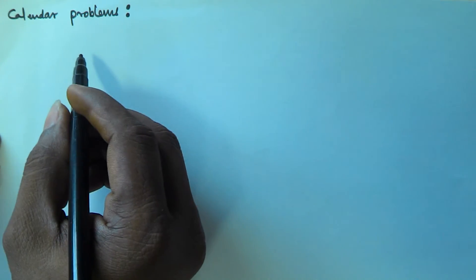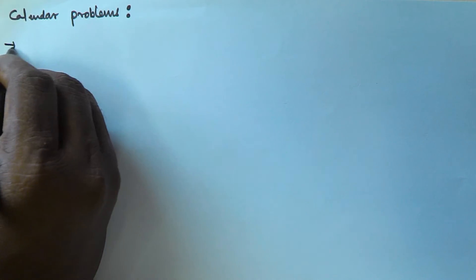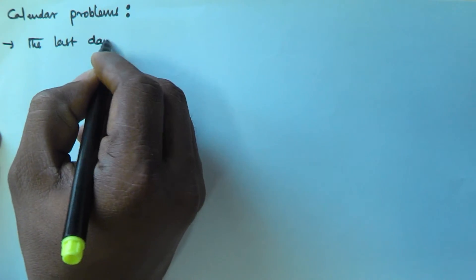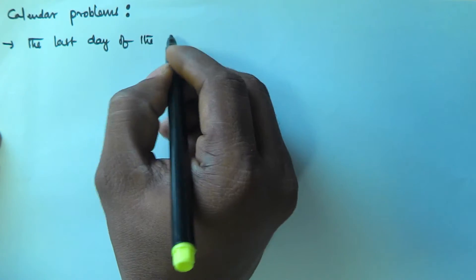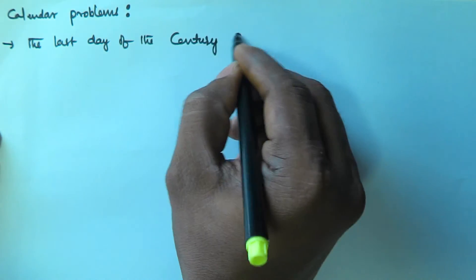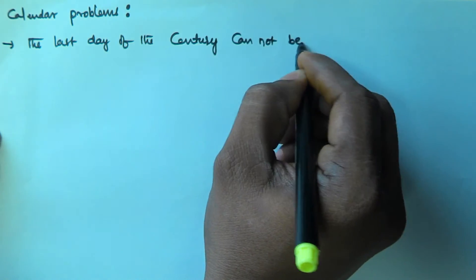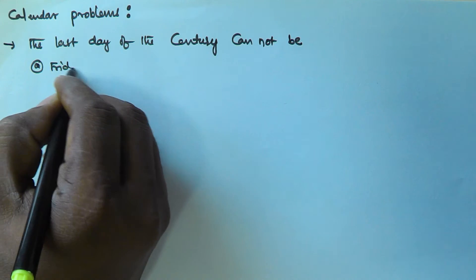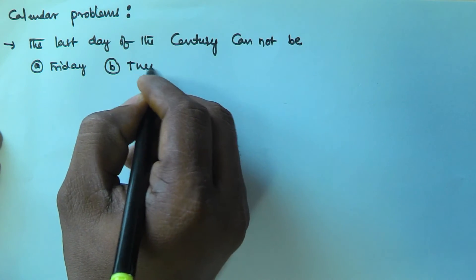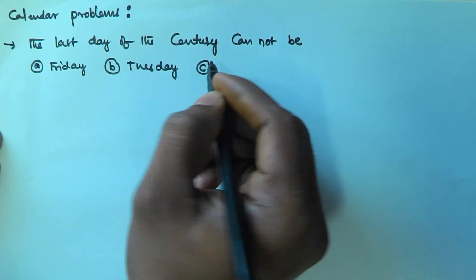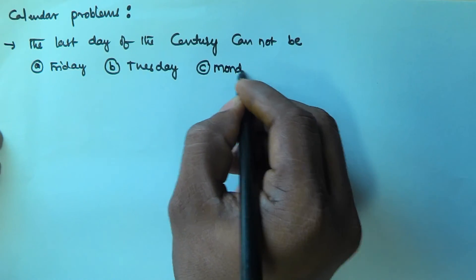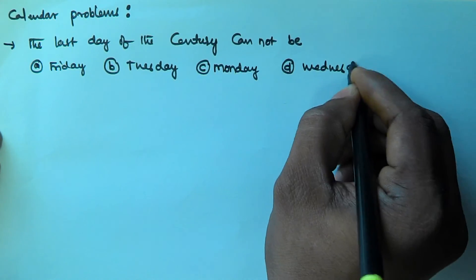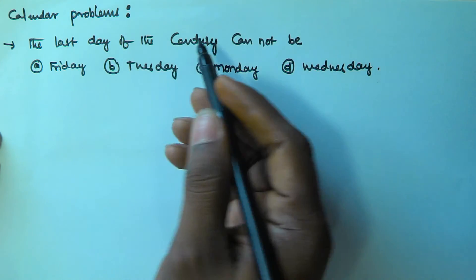Hello friends. In this video we will see another problem related to the calendar. The problem is: the last day of the century cannot be — and the options are A. Friday, B. Tuesday, C. Monday, D. Wednesday. So the last day of the century cannot be which day?